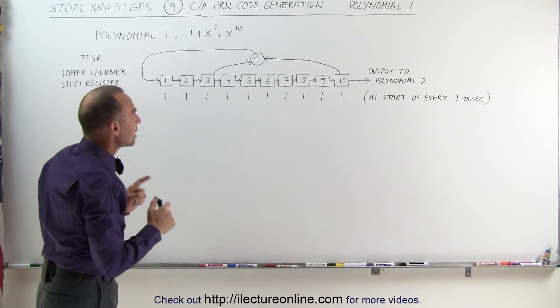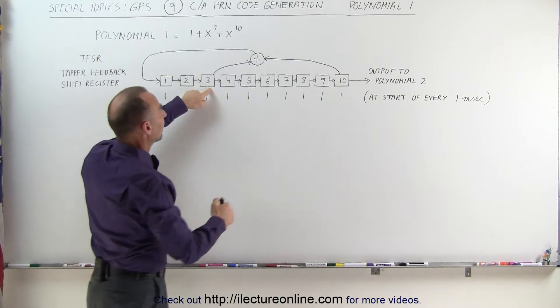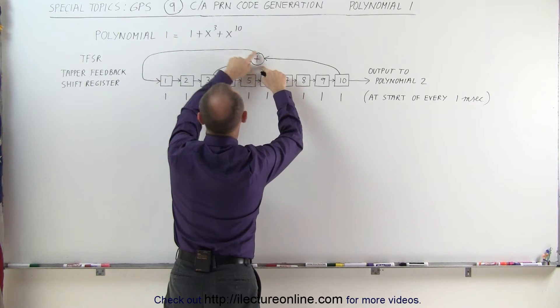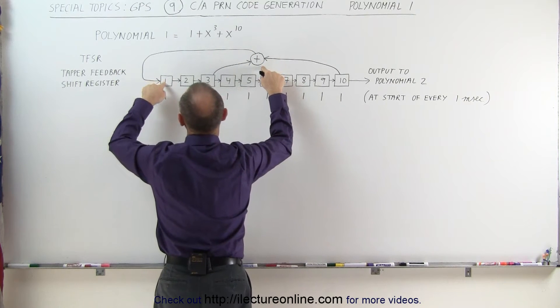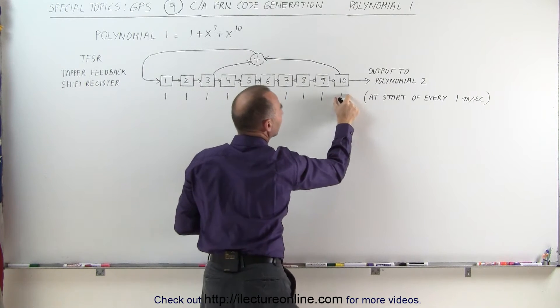What we're going to do here, the process is as follows with the first polynomial. The process is we take the 3rd bit and we take the 10th bit, we sum them, whatever the result of that is goes over here and replaces what's in bit 1, all the other bits get shifted over and the 1 here gets sent off.